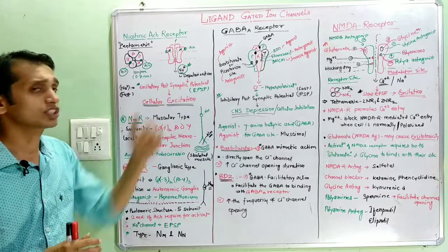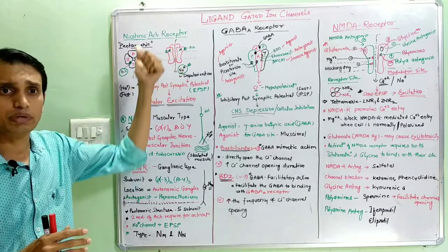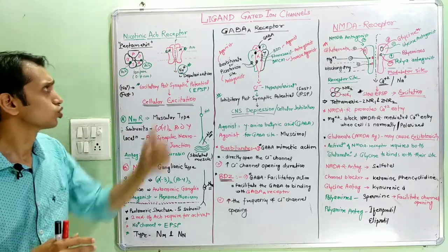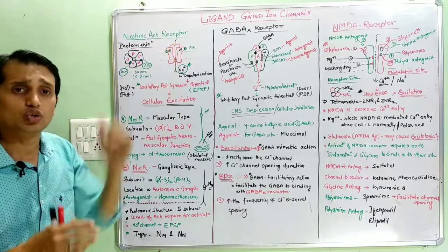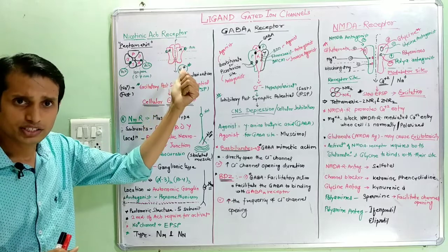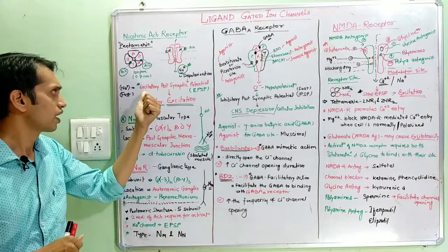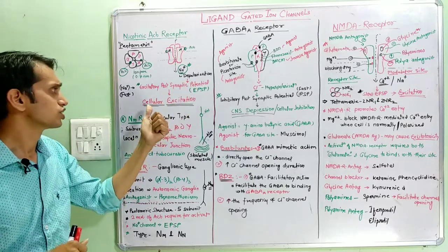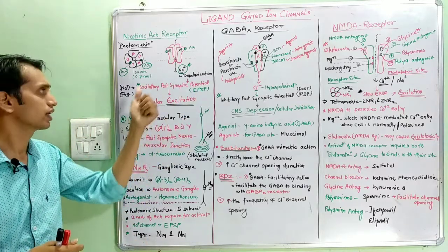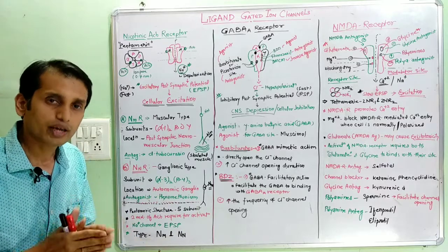Activation of nicotinic receptors requires two molecules of acetylcholine, which bind at the ligand-gated sites and activate the receptor. After activation, ion channels open and sodium ions enter the cell. The increased intracellular sodium causes membrane depolarization, producing excitatory post-synaptic potential (EPSP) and further cellular excitation. Sodium ion entry produces fast EPSP.